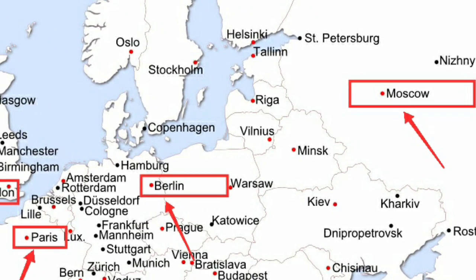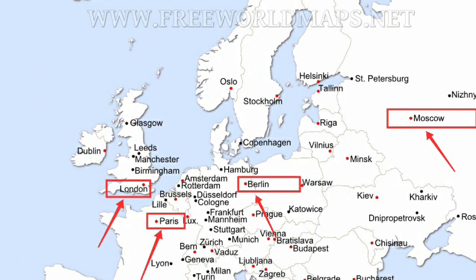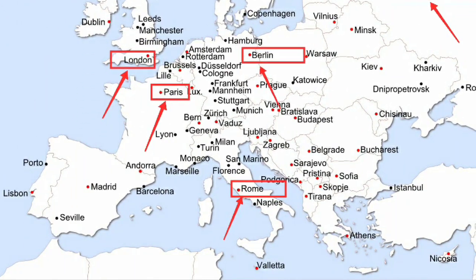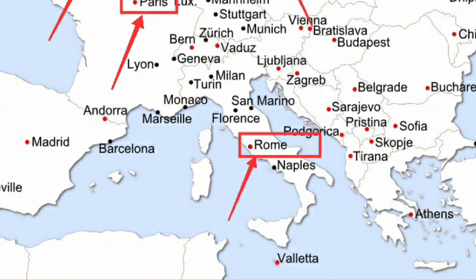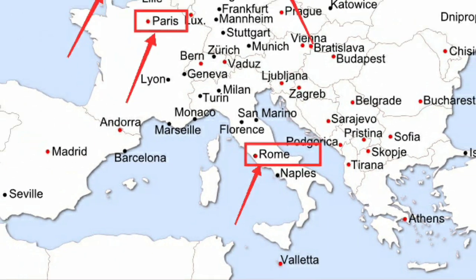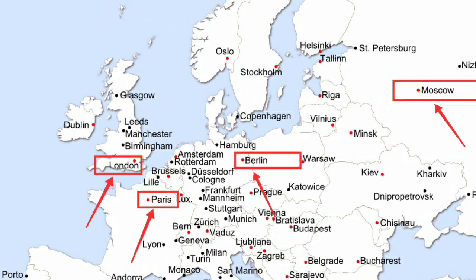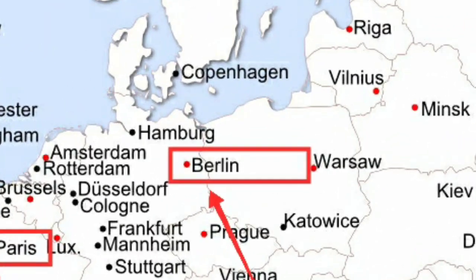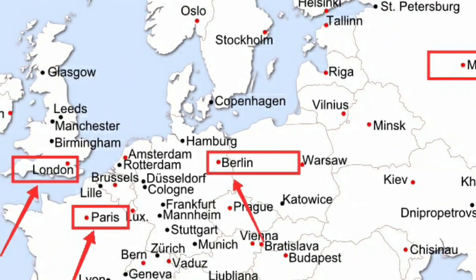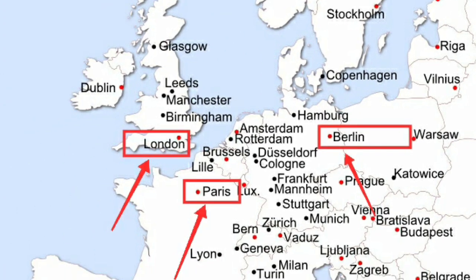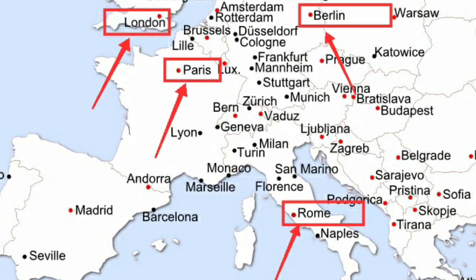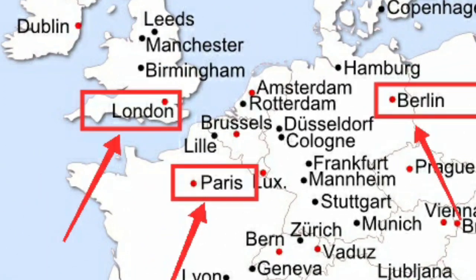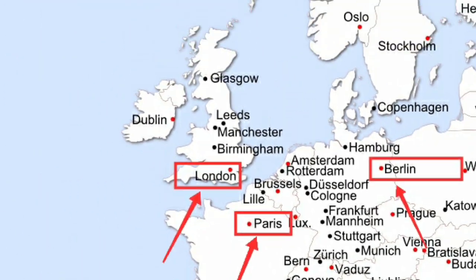First, we will see Moscow — Moscow is the capital of Russia. Next, we have Rome, which is the capital of Italy. Next, we have another very important place called Berlin — Berlin is the capital of Germany. Next, we have Paris, which, as you all know, is the capital of France. And then we have London, which all of us know is the capital of England.